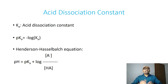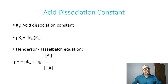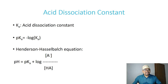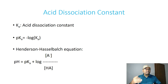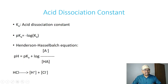Henderson and Hasselbalch established a very important equation by which we are going to understand how to measure the pKa. The equation is: pH = pKa + log([A⁻] / [HA]). Here, HA stands for the acid or weak acid. The acid undergoes dissociation to give H⁺ and A⁻ — it donates the proton and forms a conjugate base, A⁻.